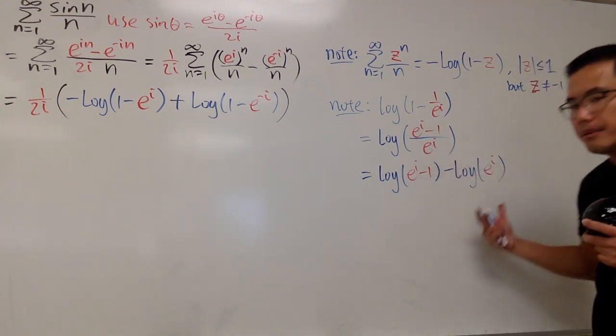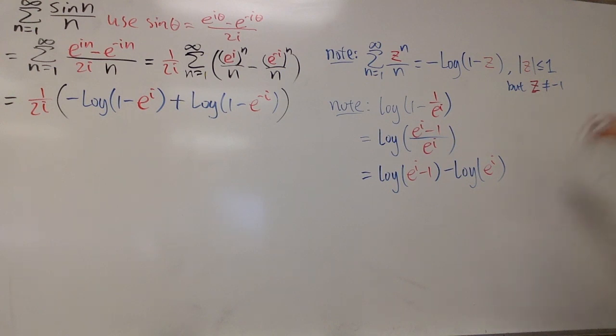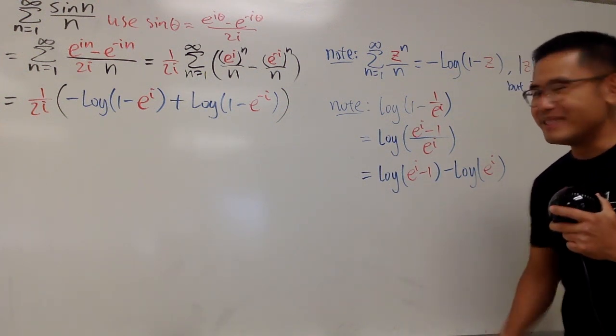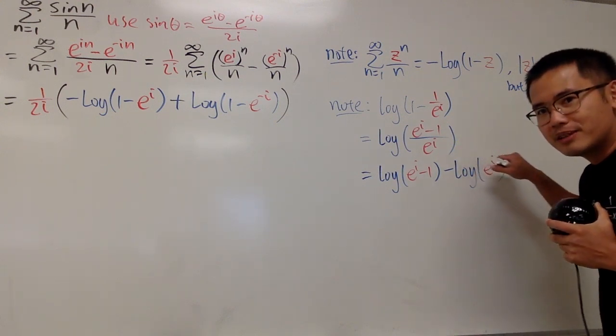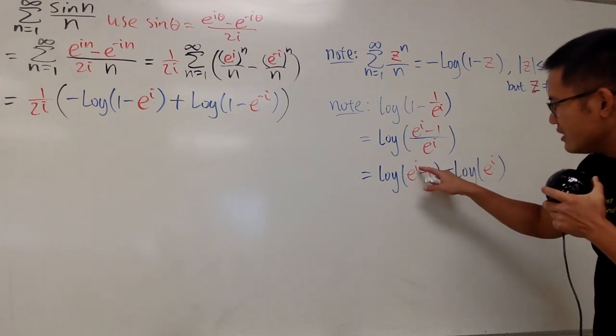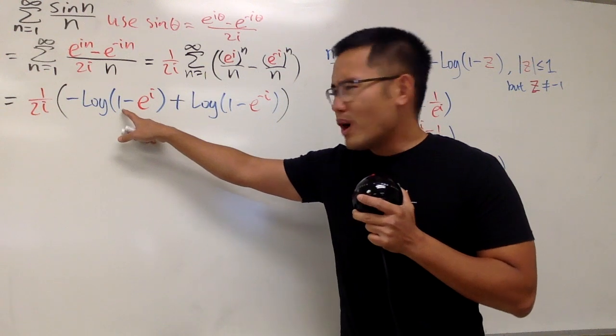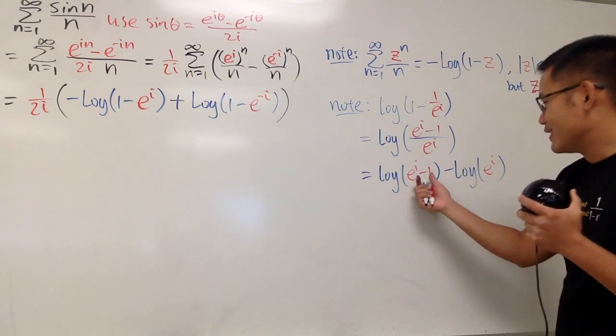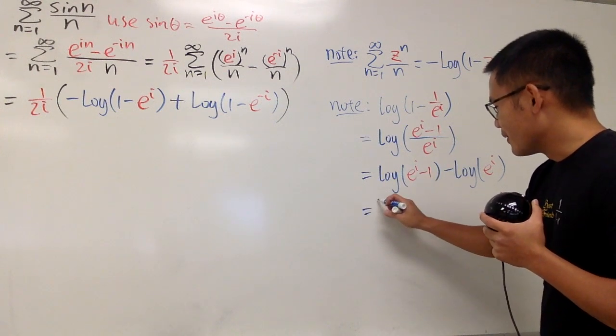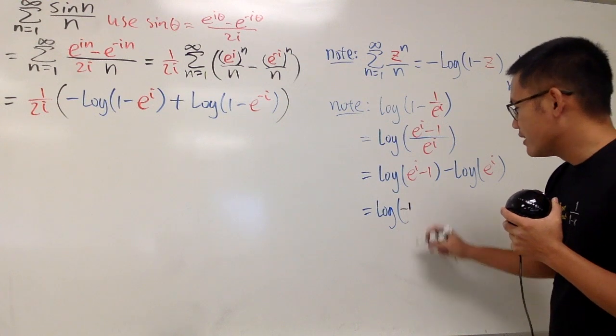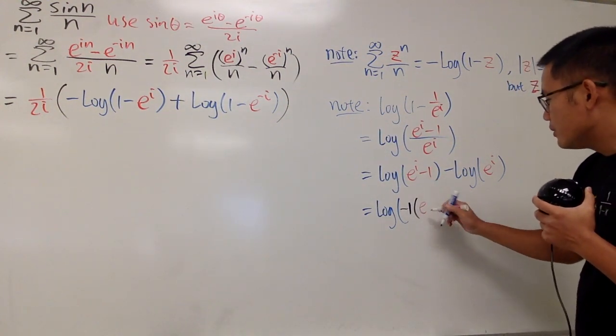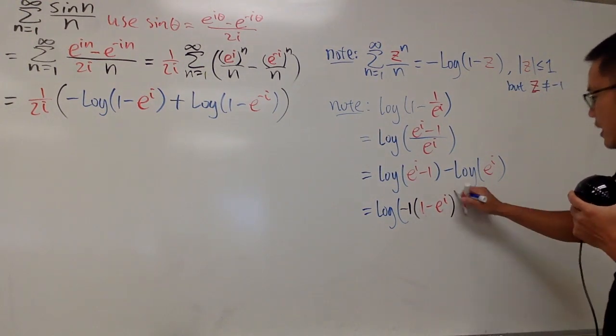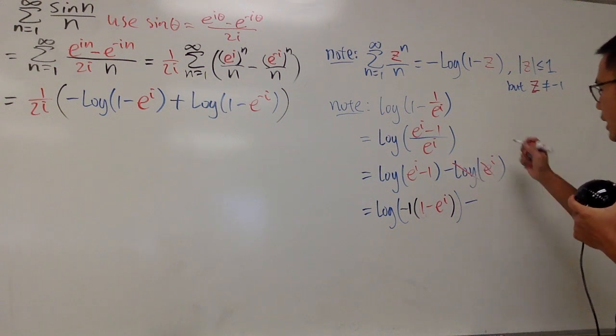This is going to be log of e to the i minus 1, and minus log of e to the i. And I know, technically, when we break this apart, we should put down a plus 2 pi i times the integer, but in this case, we can just look at the branch cut from negative pi to pi, and this is enough, right? This is it. Let me just tell you guys that. All right. This is nice, because, again, we can cancel it out very nicely. But here we have e to the i minus 1. This is 1 minus e to the i. Again, they are almost the same. Let's make it the same. I will switch the order of subtraction. And, of course, we can just do the following.